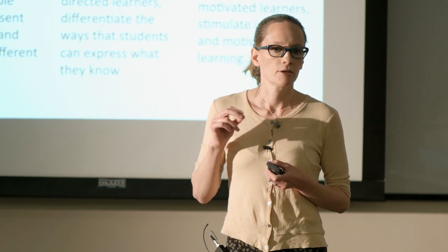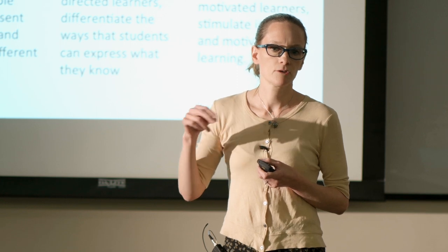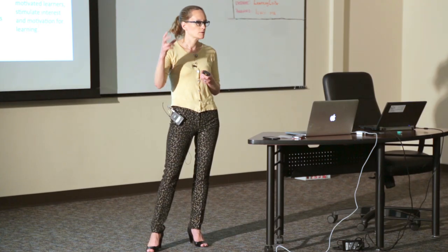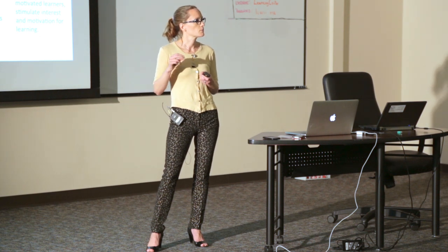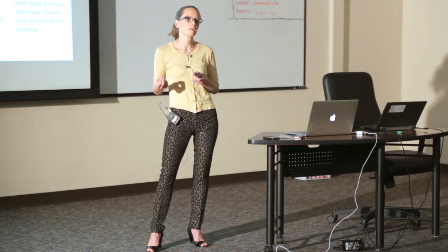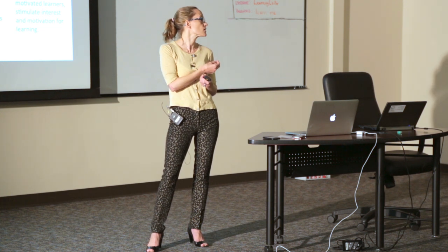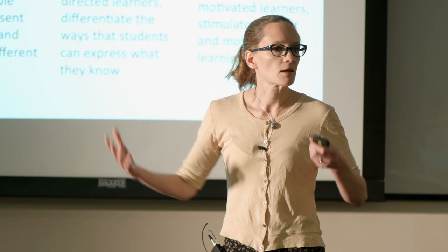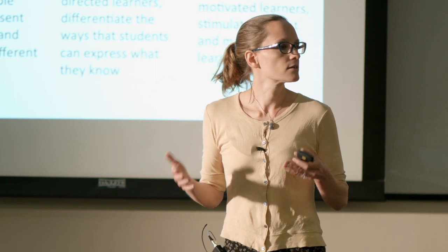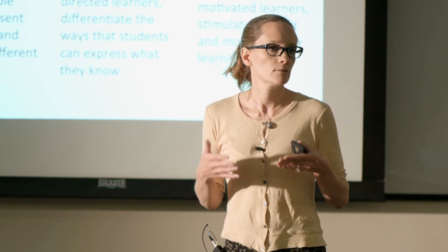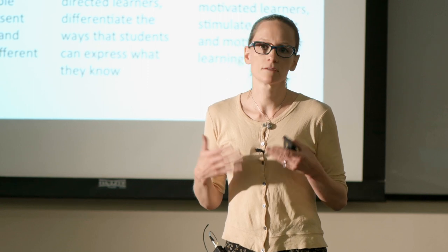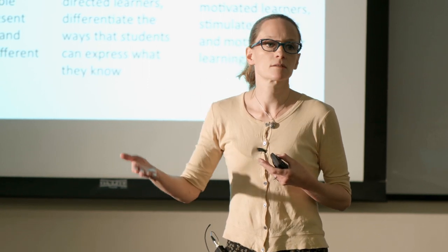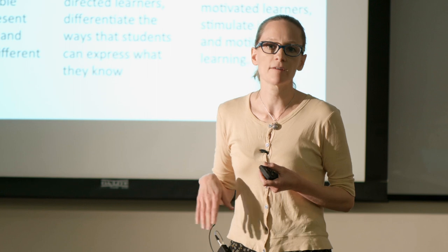If our learning goal is that a student understands cell structure, we need to plan for the fact that some students process that information visually while others need a different mechanism. We need to design for that — not necessarily eight representations, but at least a couple that meaningfully get students to the same goal through different avenues.